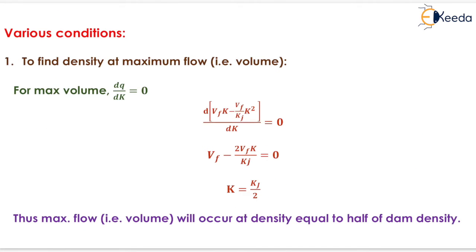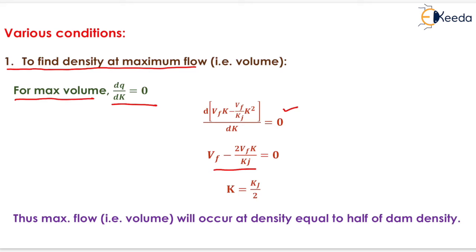Now we have various conditions. The first one is to find density at maximum flow, that is volume. For maximum volume, dQ upon dK will be equals to zero. On solving this, we will have Vf minus 2Vf K upon Kj equals to zero. From this, K will be equals to Kj by 2. Thus, maximum flow will occur at density equals to half of jam density.